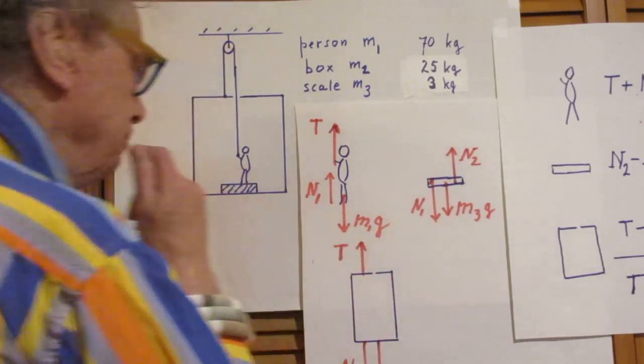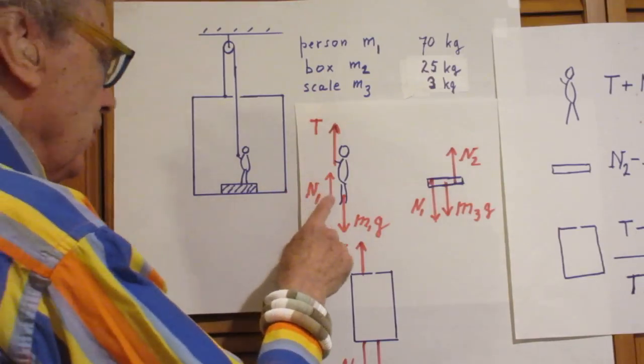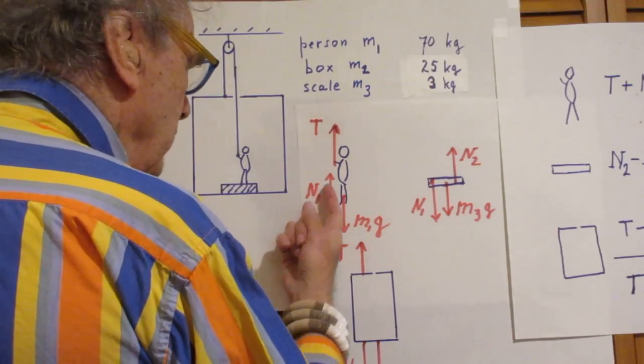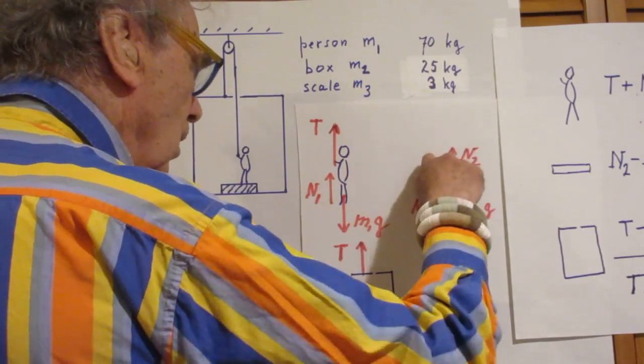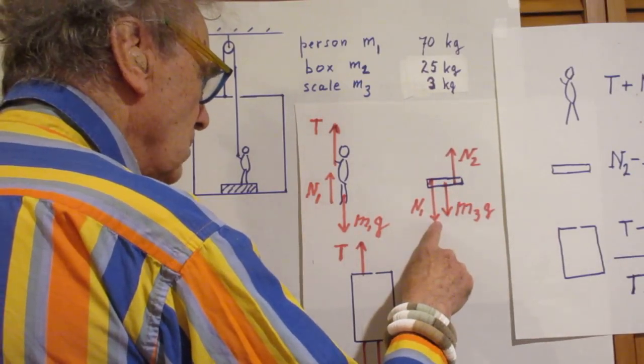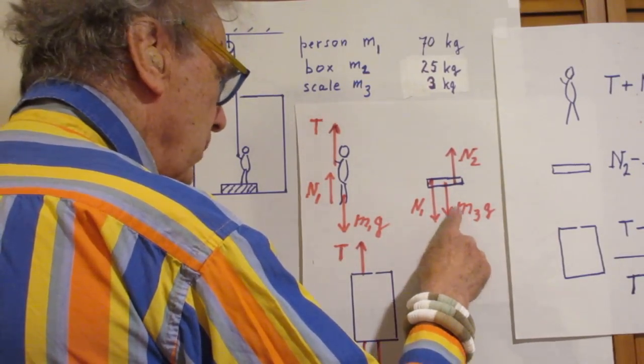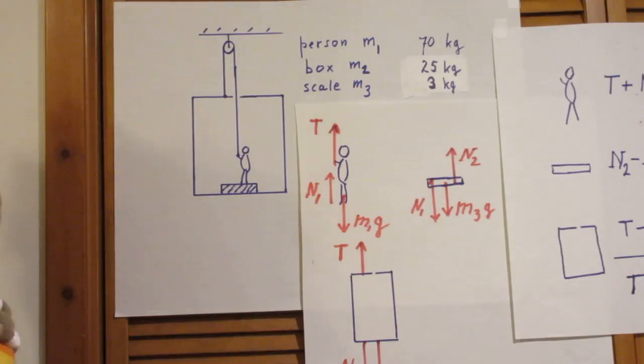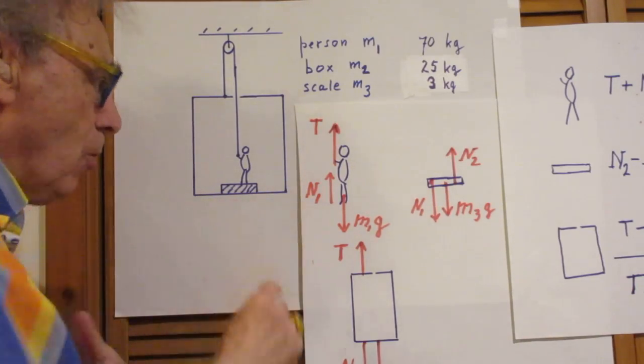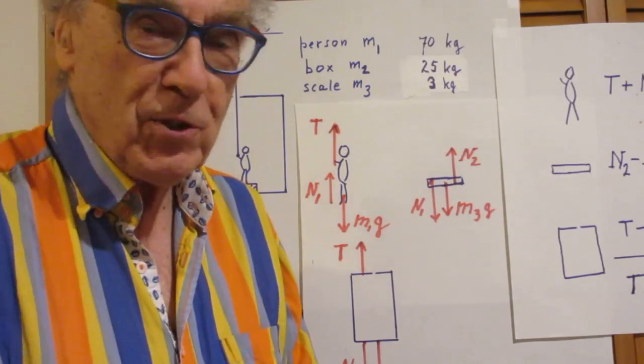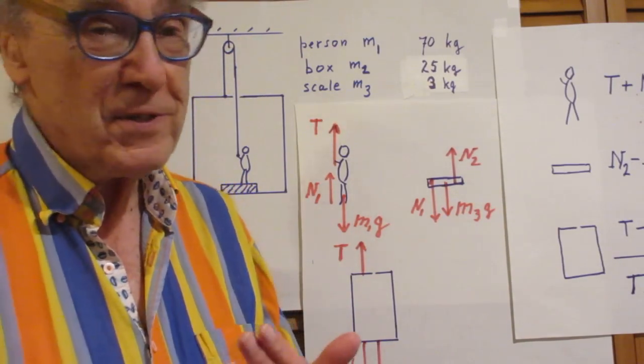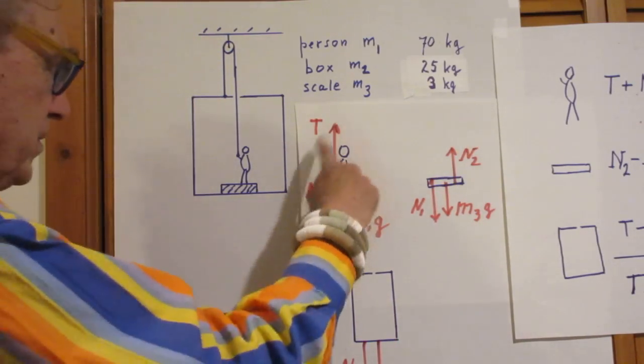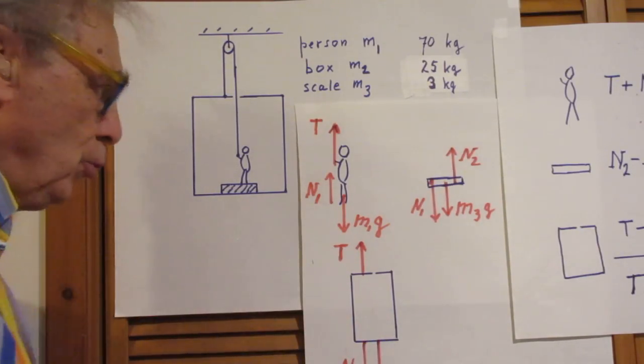Let's now go to the scale. If the person is being pushed up by the scale in this direction with N1, that means the person pushes down on the scale with N1. So N1 is down. The scale has a mass m3, so the gravitational force is m3g. Now, it is the bottom of the box that is now pushing upwards on the scale. It's another normal force, and I call that N2. There are three forces here and there are three forces there.